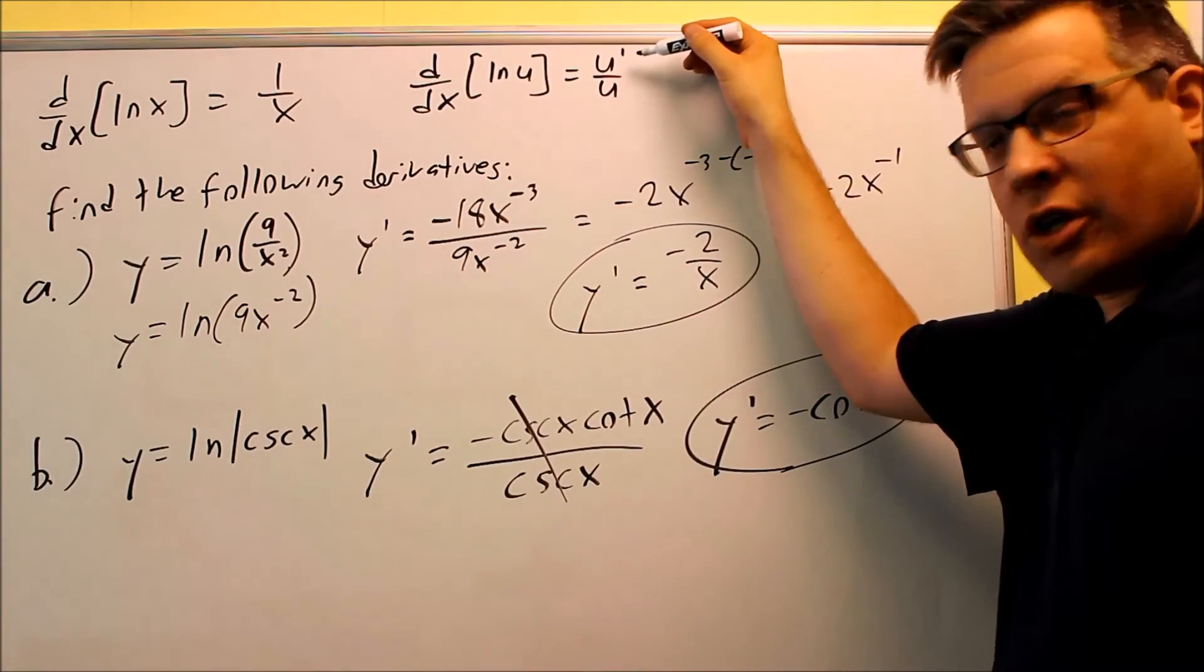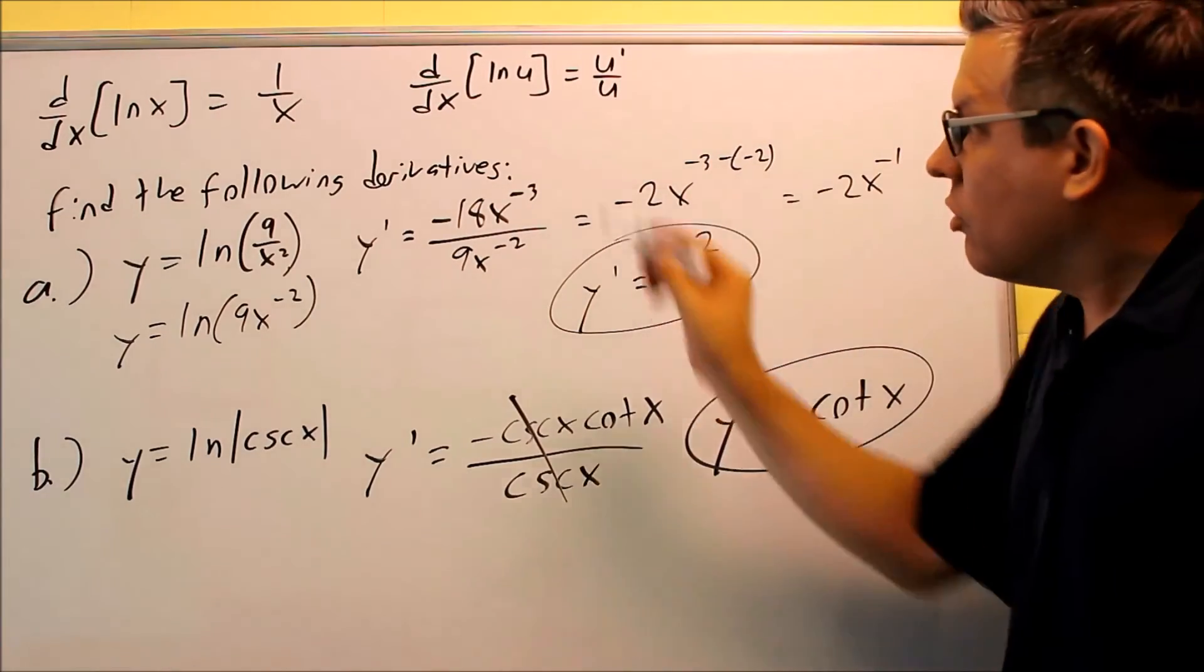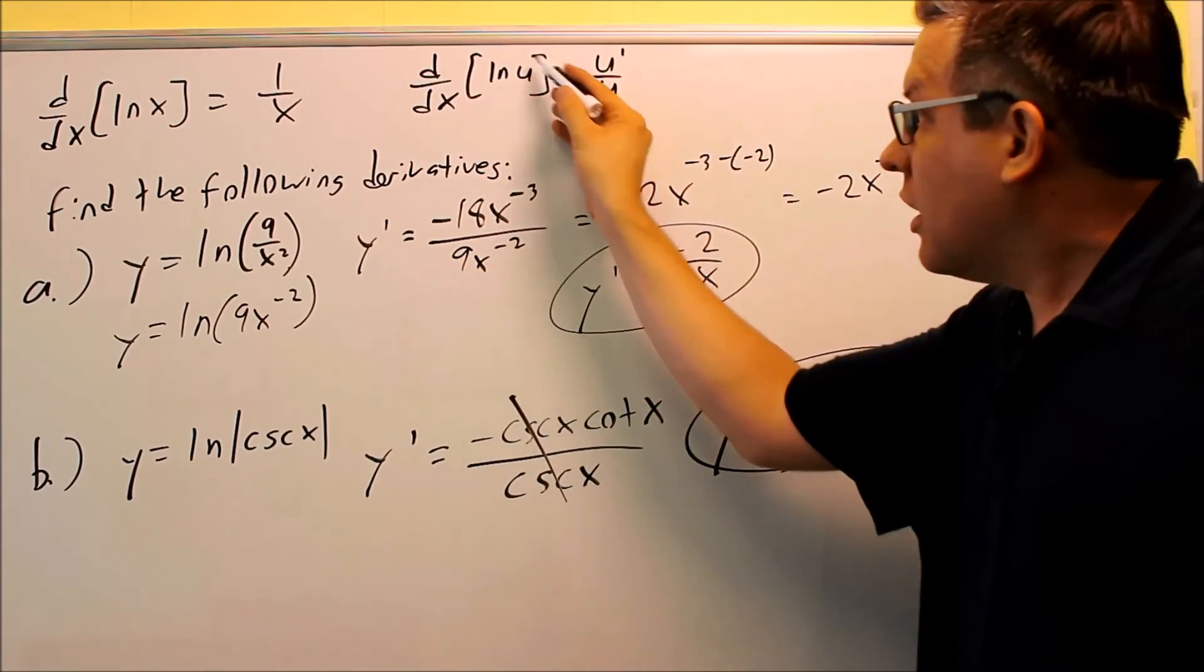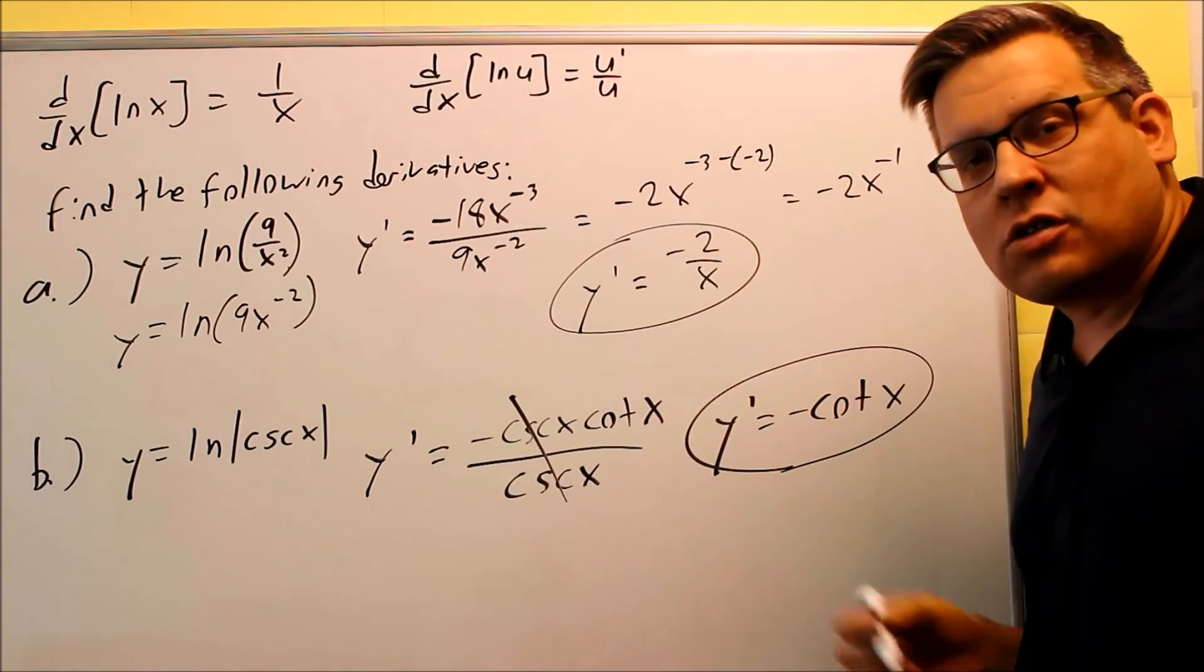So again, the formula that's important to know here, u prime over u, whenever you're taking the derivative of a natural log, and the part inside is something that's other than a regular x.